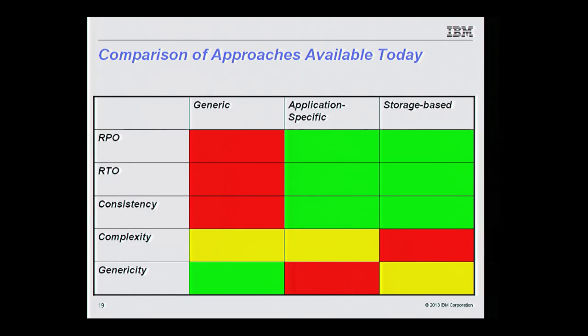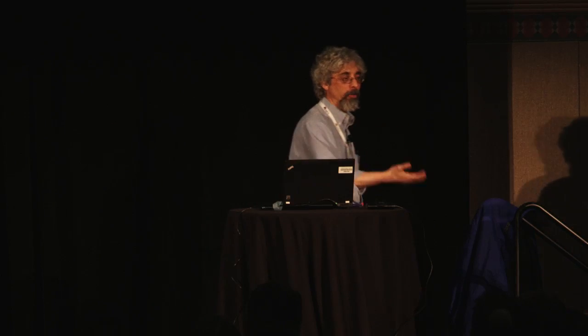The storage-based approaches have good RPO, RTO, and consistency — these are the mechanisms used by banks to replicate financial transactions with no data loss, quick recovery, and consistency. But they can be fairly complicated to manage and today there's no way to integrate them into OpenStack. The approaches I showed — either pools of paired volumes or managing outside OpenStack — are not for the faint of heart. They're moderately generic in that on a given storage implementation any application will work, since they operate at the storage level rather than the application level.